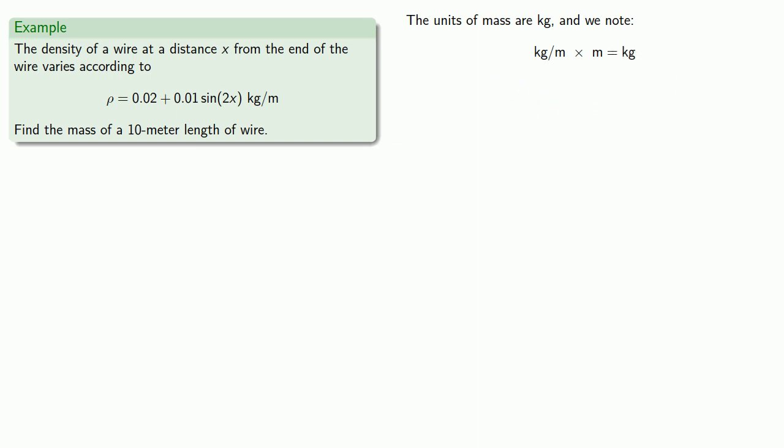Now because our density is variable, we need to take a short length of wire, and we can find its mass as density times length. So we'll multiply our density given by our function by our length, which since x is our distance, our length is going to be a small bit of distance, which we'll represent as dx.